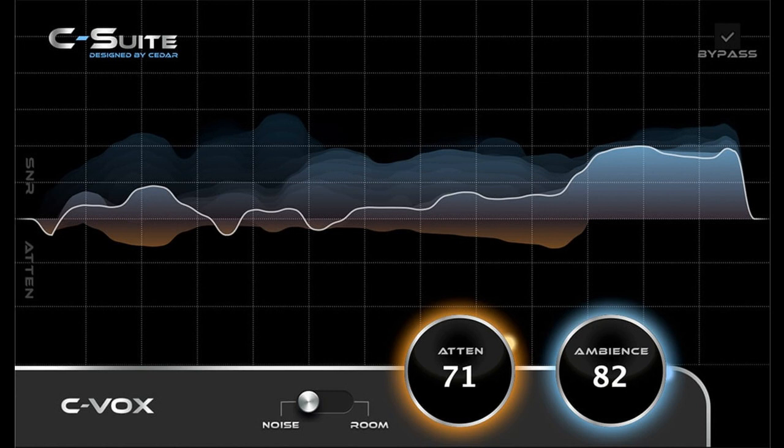C-Vox Noise and Ambience Reduction Key Features: Noise Suppression Technology with Real-Time UAD Processing, carefully tailored for processing vocals. Simple controls for transparently reducing ambient noise in real-time with near-zero latency. Quick, adaptive processing without noise fingerprints and unwanted artifacts.